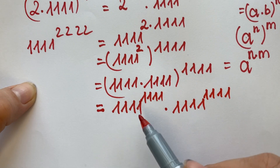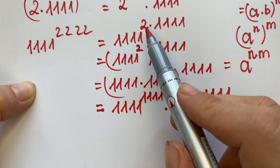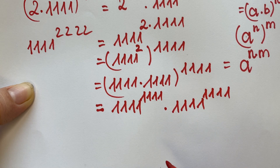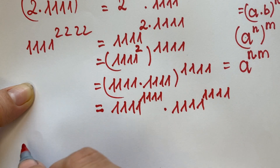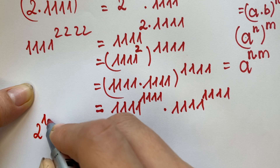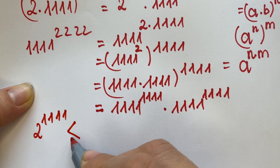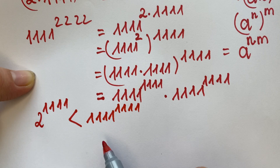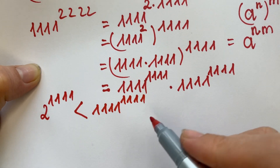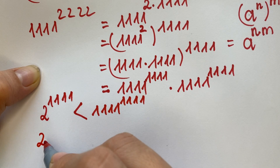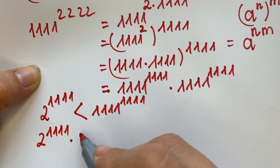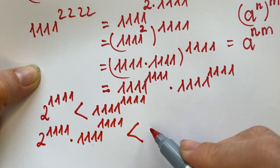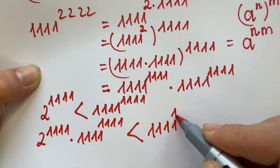Now you can see that 1111 is much greater than 2. Therefore (1111^2)^1111 is greater than 2^1111 times 1111^1111, meaning 1111^2222 is greater than 2222^1111.